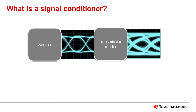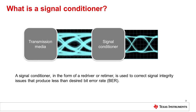As discussed in the previous session, what is a signal conditioner? A high-speed transmission system includes a TX and an RX. The transmission media between the transmitters and receivers can be in the form of traces, connectors, and cables. Maintaining signal integrity for these high-speed signals over the transmission media is very important, but quite challenging. There are many factors that contribute to signal integrity degradation when a multi-gigabit signal passes through a transmission media. The signal integrity degradation can be resolved or mitigated through the use of signal conditioners.